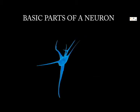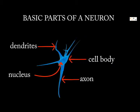The basic parts of a neuron are dendrites, cell body, nucleus, and axon.